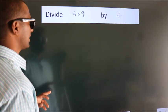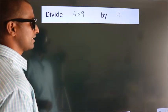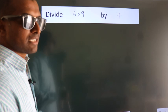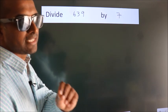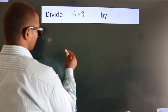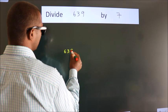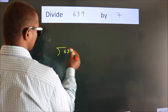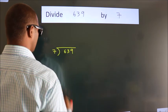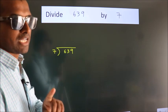Divide 639 by 7. To do this division, we should frame it in this way. 639 here, 7 here. This is your step 1.